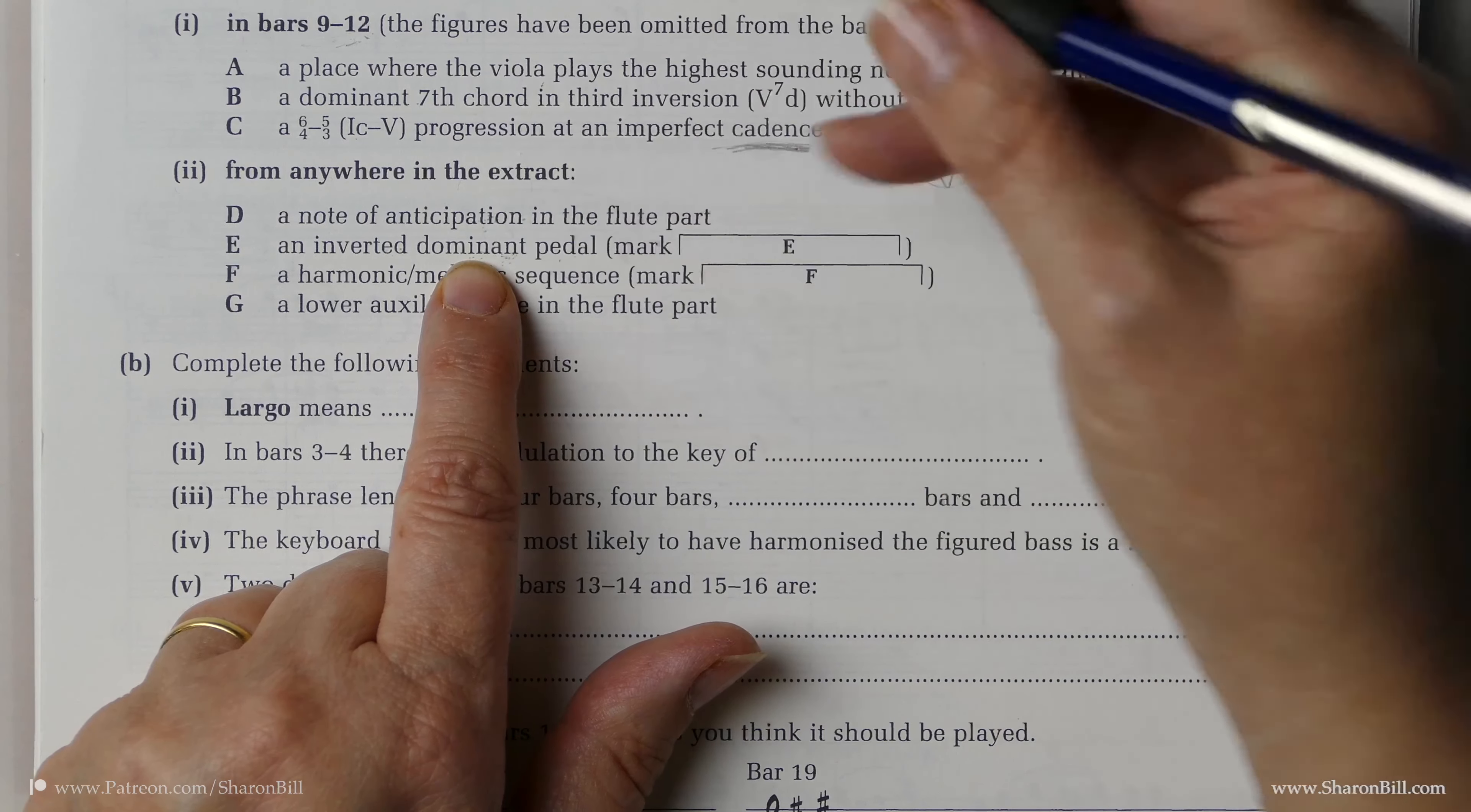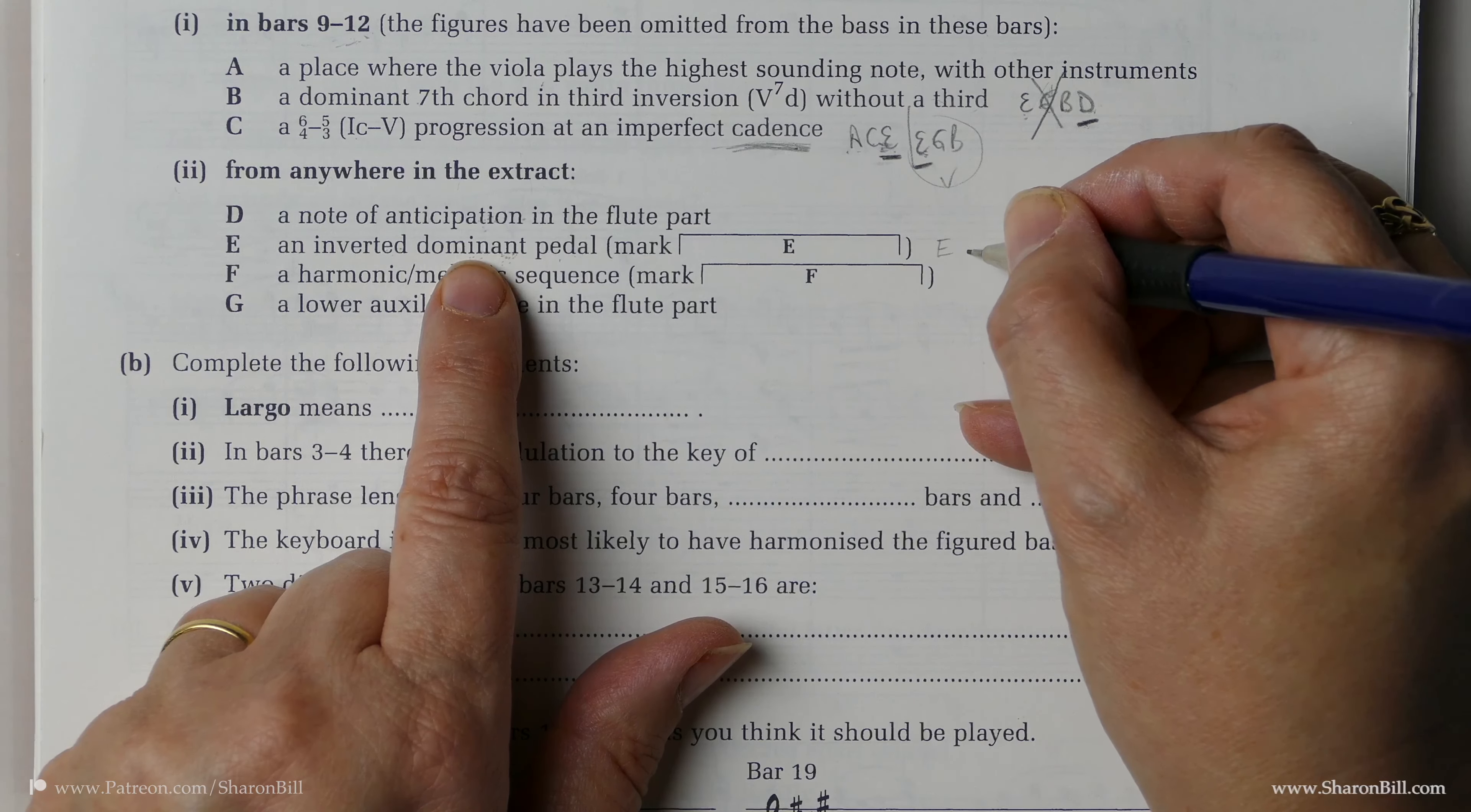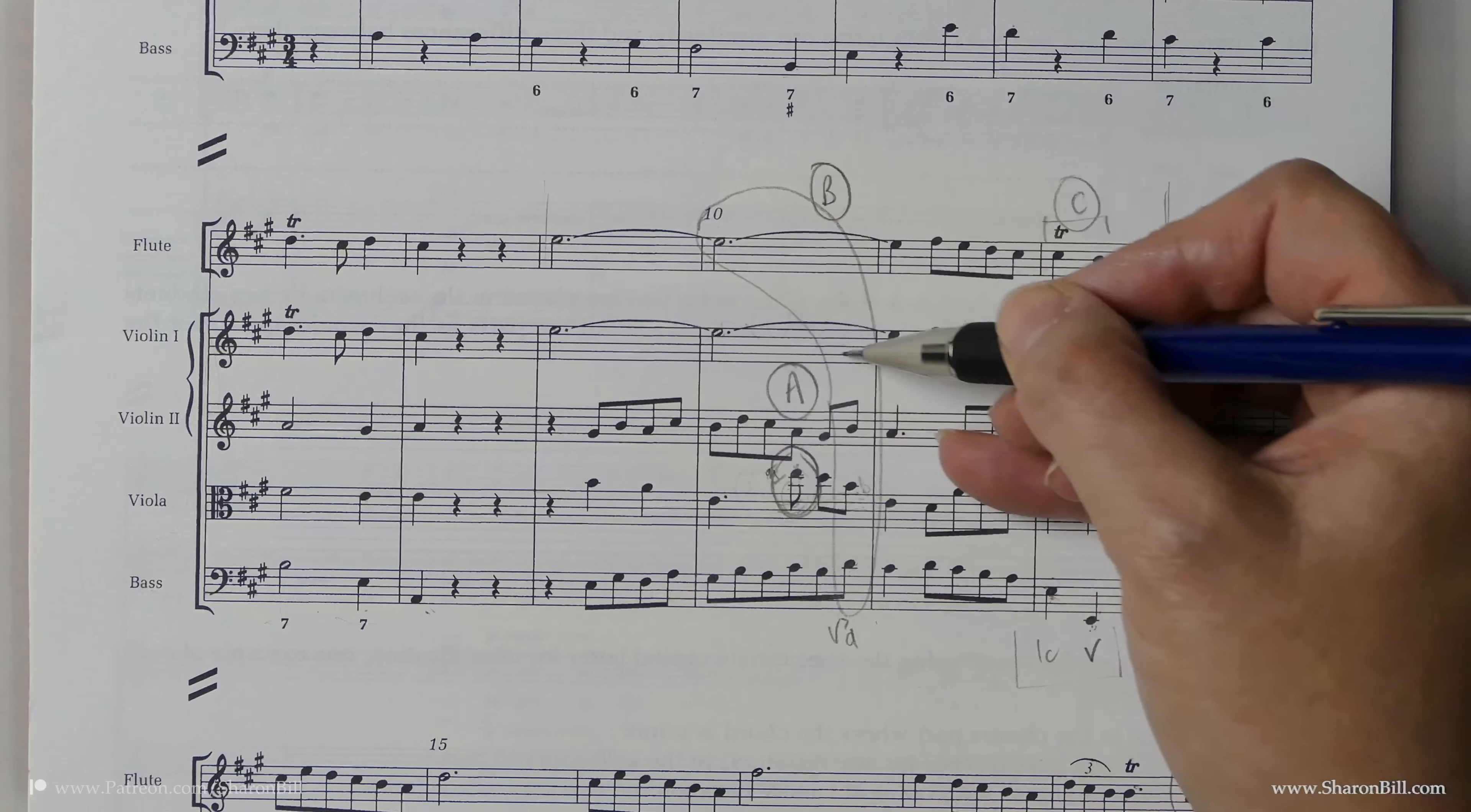So we need to know what the dominant pedal is. If we're in A major, then the dominant is E. So we're looking for a repeated held E note, and it's going to be in a middle or upper part.